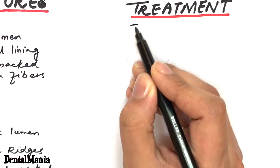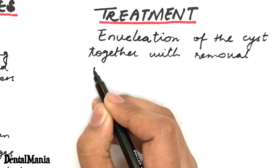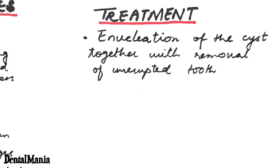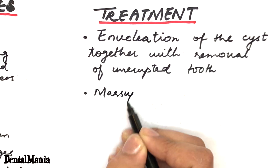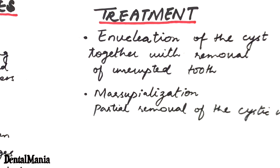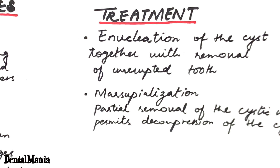The usual treatment for dentigerous cyst is careful enucleation of the cyst together with removal of the unerupted tooth. If eruption of the involved tooth is considered possible, the surgical procedure used to save the tooth is marsupialization. In marsupialization, the cyst is partially removed, which permits decompression of the cyst. The cyst can then be excised at a later date with a less extensive surgical procedure.